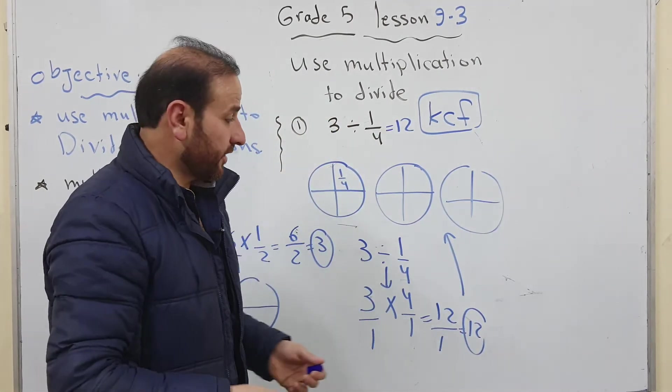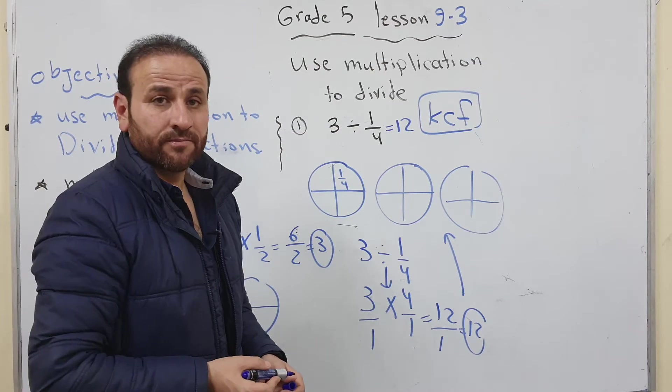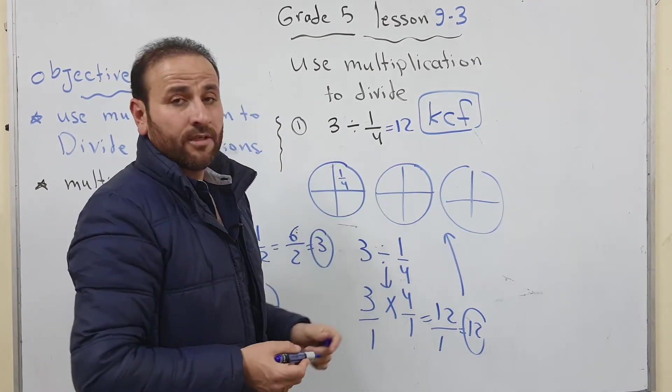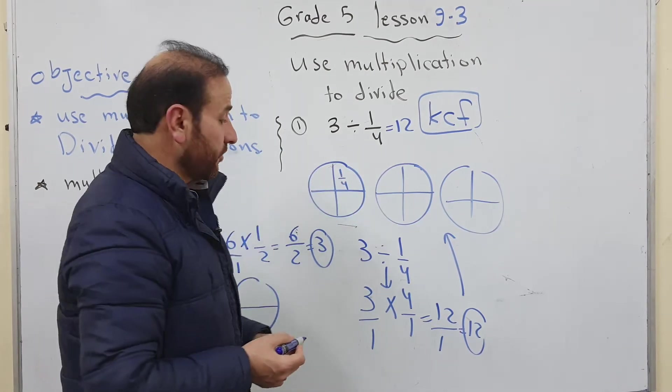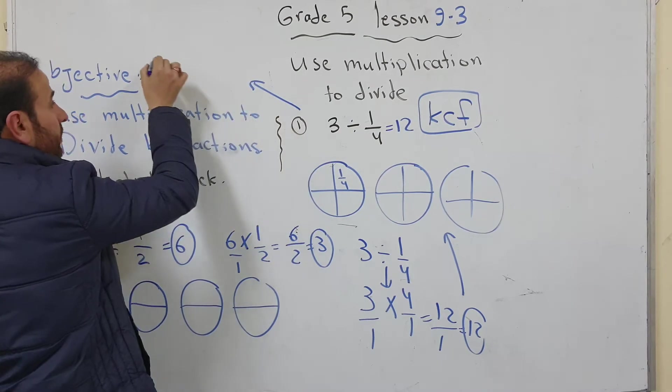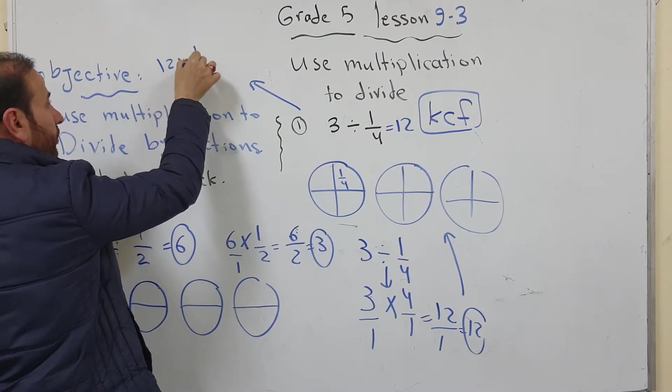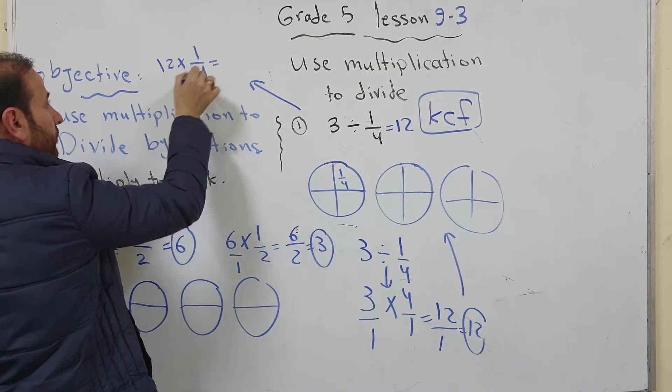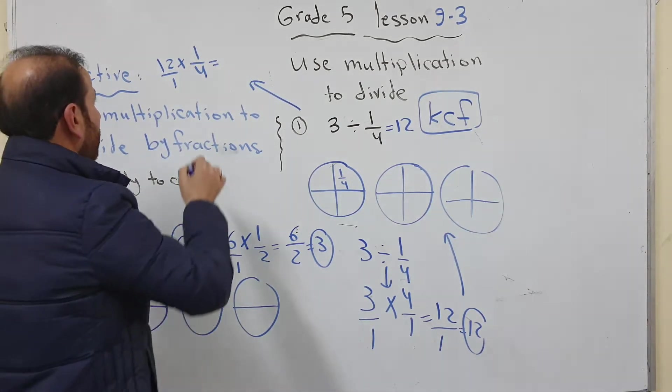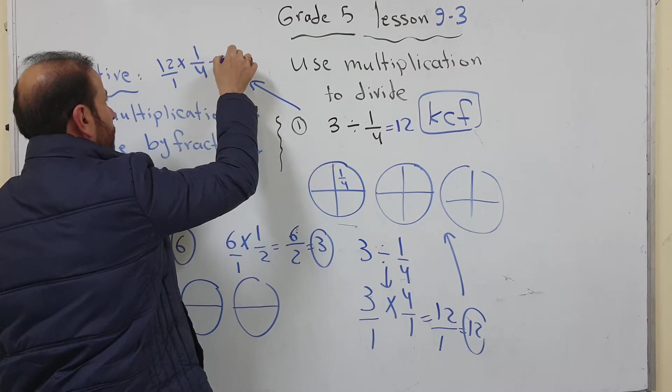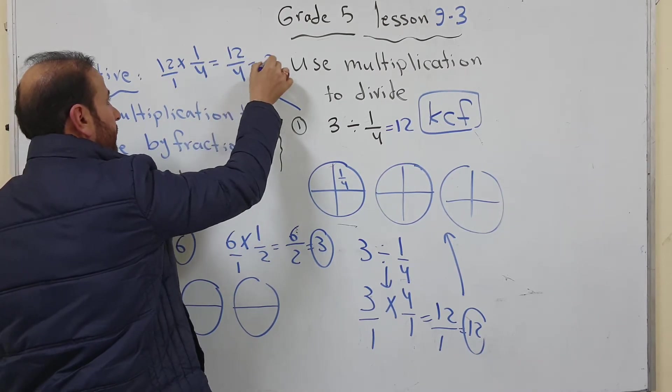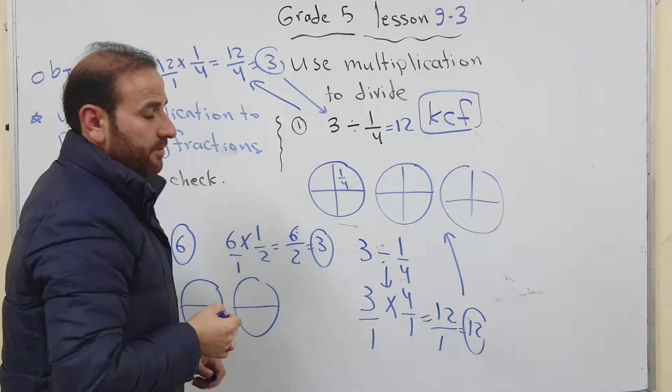Now how do I check by multiplication. Now I divide the quotient by the divisor to check if I get the dividend or no. I just multiply here. 12 multiply 1 over 4. So I put here 1 as the numerator for 12. 12 multiply 1 equals 12, 4 multiply 1 equals 4. 12 divide 4 equals 3 is the same as dividend.